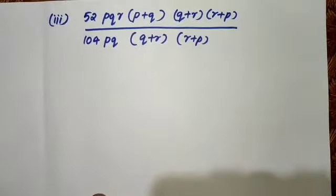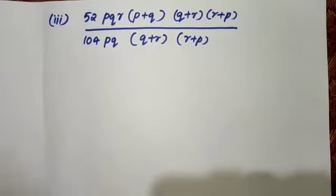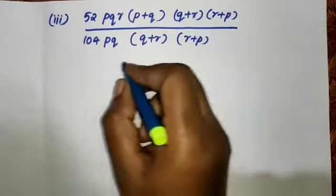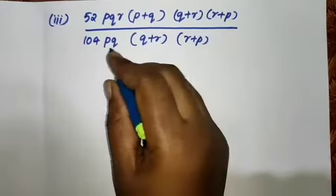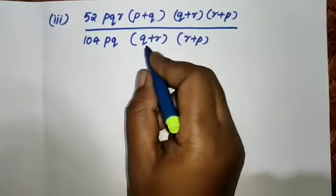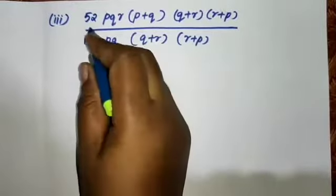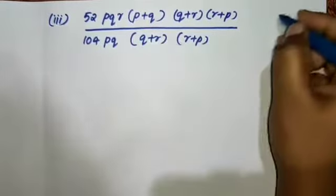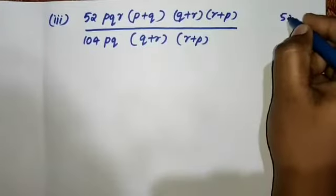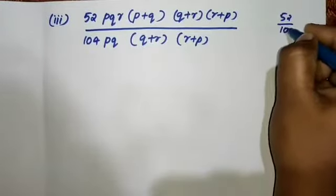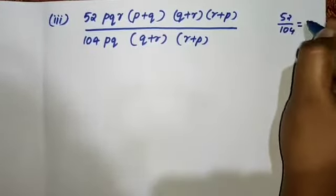Next is 52pqr into p plus q into q plus r into r plus p, divided by 104pq into q plus r into r plus p. This is 52 by 104, so we can simplify it.